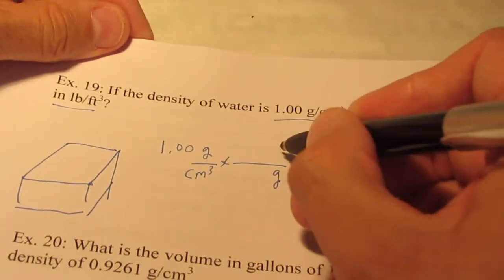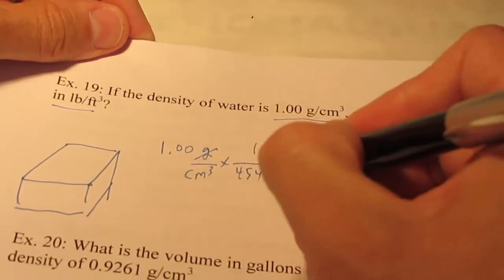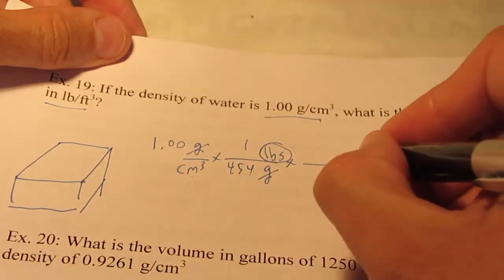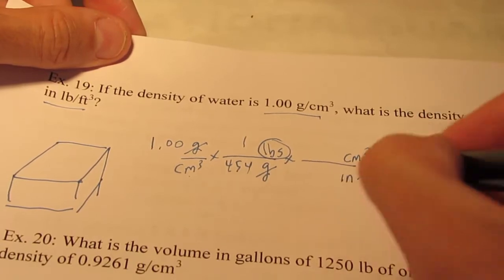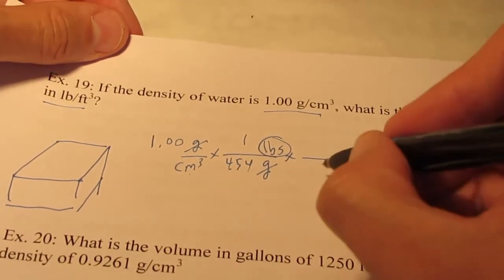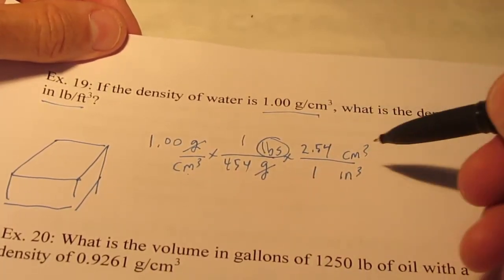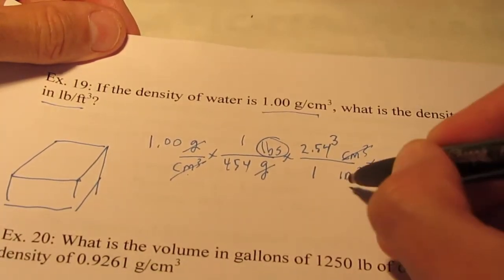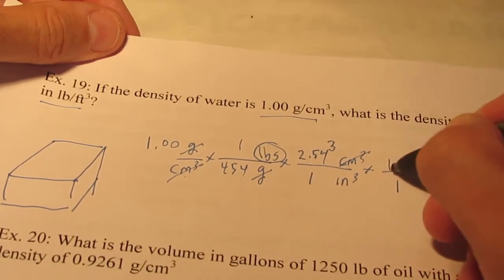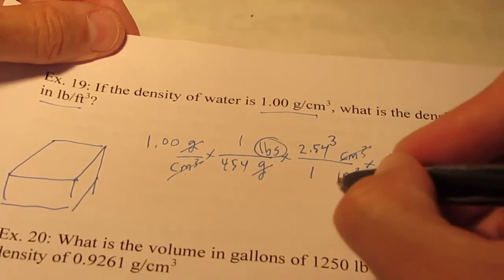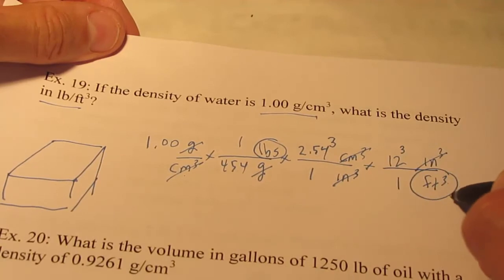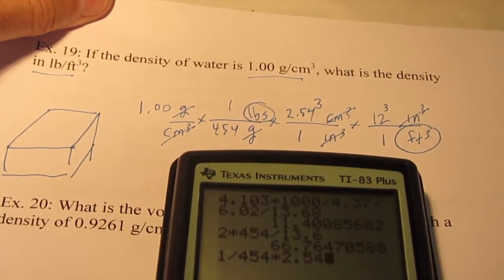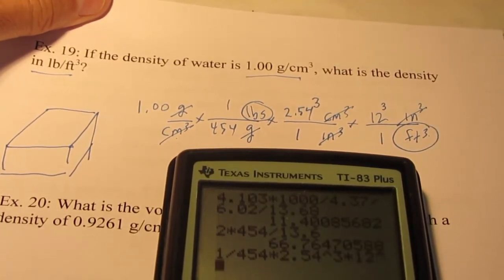Let's go from grams to pounds first. 1 pound is 454 grams. So now I have pounds per cubic centimeter. I'm going to put that on top and then make it in cubic inches first, because I don't know how many cubic centimeters are in a cubic foot. In 1 inch, there are 2.54 cubic centimeters. But the unit's cubed, so we have to cube the conversion factor. Then we can go from cubic inches to cubic feet. In 1 foot, there are 12 inches, but the unit's cubed, so we'll cube the conversion factor.